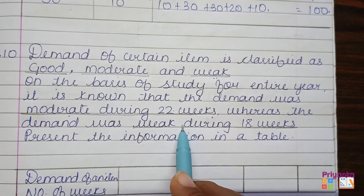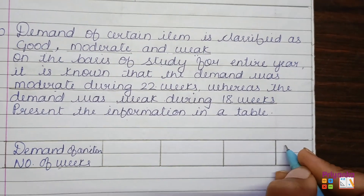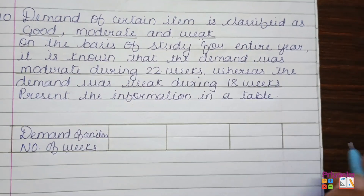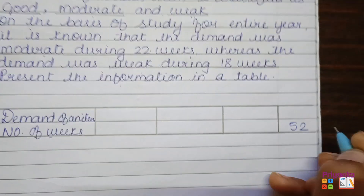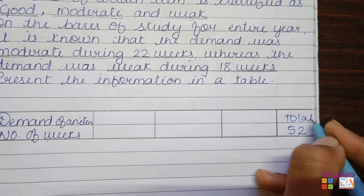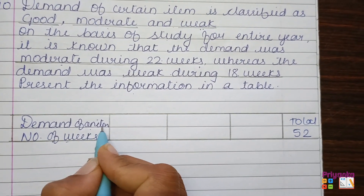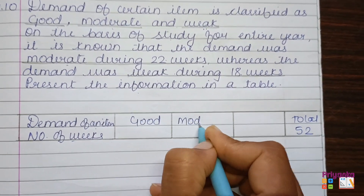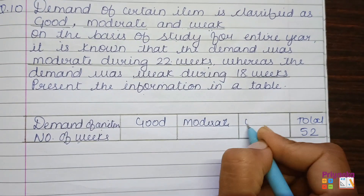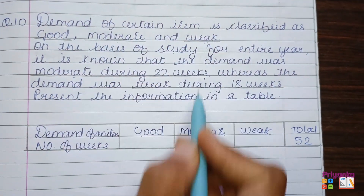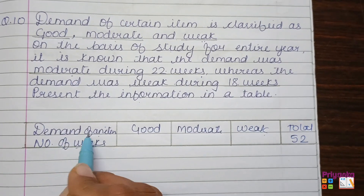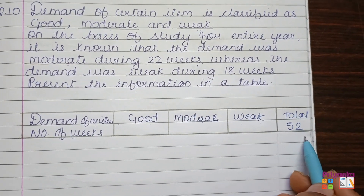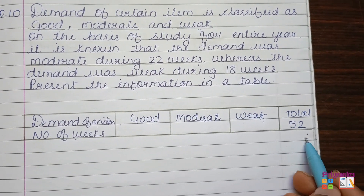First of all, we have to write down the total. The total number of weeks in a year is 52. Out of this, the demand of an item was good, moderate, and weak. The total number of weeks in a year, that is 52, is noted. The demand was moderate during 22 weeks and weak during 18 weeks.